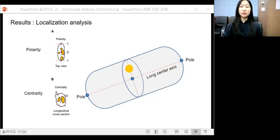And the other factor, centrality, indicates how close the PHA granules locate from the cell center. It is defined as the ratio of the distance of the PHA granules from cell membrane to the distance between the long center axis and the cell membrane at its cross-section here. Based on these definitions, polarity and centrality have a range of 0 to 1. And the higher polarity and centrality indicate that the PHA granules are located near the pole and long center axis of the cells respectively.